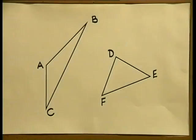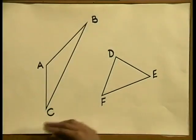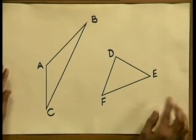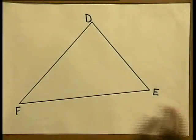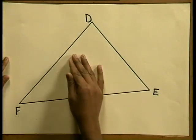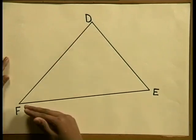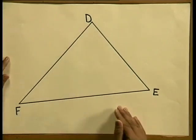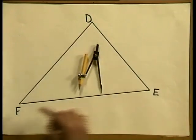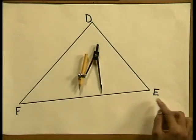What else can we do or construct in the scalene triangle? I have a diagram of two scalene triangles, already labeled ABC and DEF. We can actually bisect the angles. Remember that to bisect means to cut into two equal parts. To bisect the angle I will use a pair of compasses. I choose in this instance to bisect angle E.